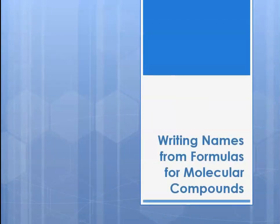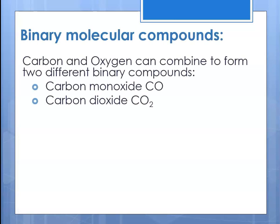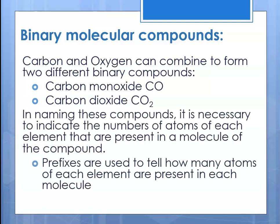We're going to begin with writing names from formulas for these molecular compounds. With these binary compounds, there are different ways that they can combine. If we think about carbon and oxygen, they can combine to form two different binary compounds: carbon monoxide and carbon dioxide. In naming these compounds, it's necessary to indicate the numbers of atoms of each element present in a molecule. The way we do that is we use prefixes — prefixes are used to tell how many atoms of each element are present in a molecule.